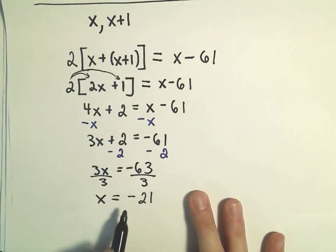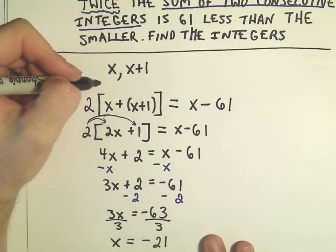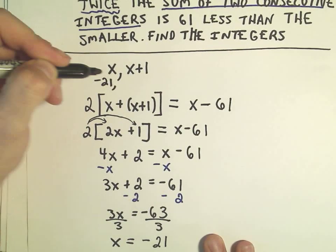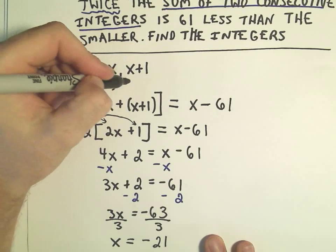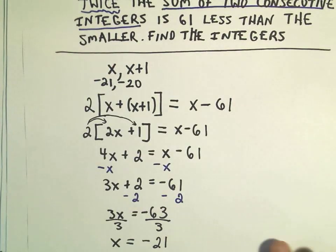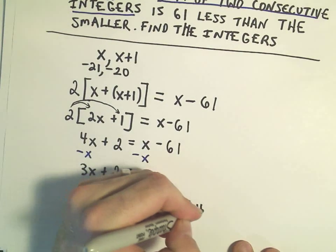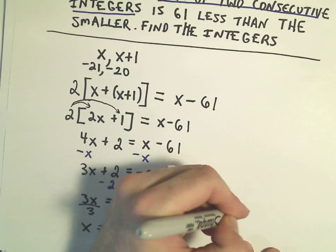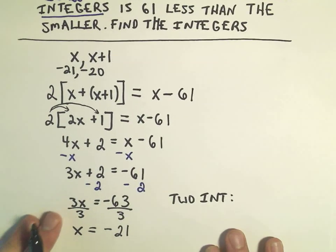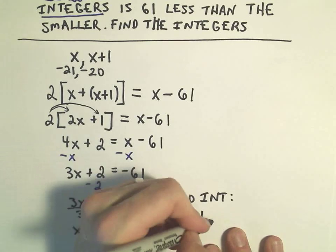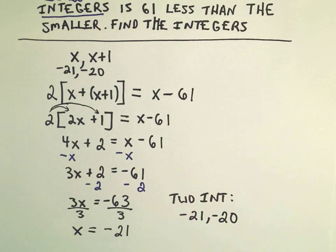The smaller integer was negative 21. If we add 1 to that, we would get negative 20. Our two integers that fit the bill here are going to be the numbers negative 21 and also negative 20.